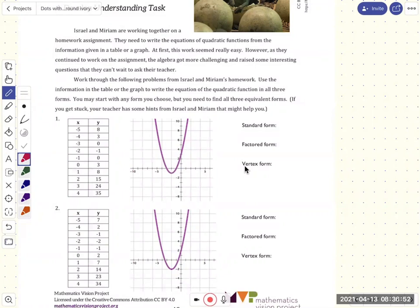And so we say, well, what is our y-intercept? So our y-intercept is at 0, 3. So what does that tell us? Well, that tells us that at the end, we're going to get a plus 3 there. The standard form is going to have the plus 3.